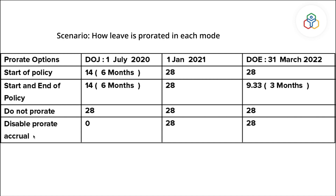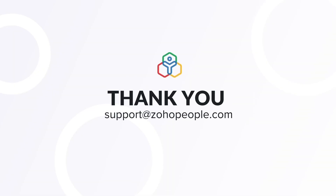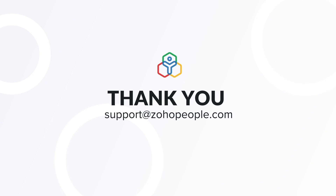If the prorate accrual option is disabled, they will not receive any leave for the year of joining and then will receive all 28 days for the consecutive years. Hope this video was useful. Stay tuned for more. Thank you.